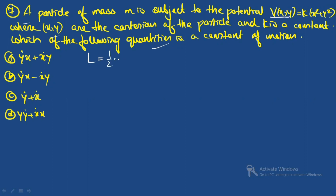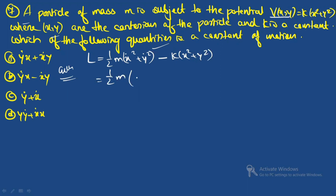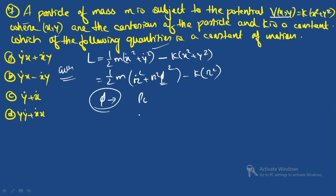The Lagrangian is L = ½m(ẋ² + ẏ²) − k(x² + y²). Converting to cylindrical (polar) coordinates in 2D: L = ½m(ṙ² + r²φ̇²) − kr². The coordinate φ is absent (cyclic), so p_φ (the angular momentum L_z) is a constant of motion.